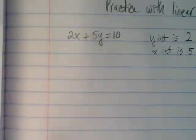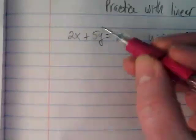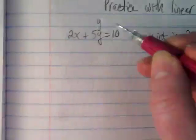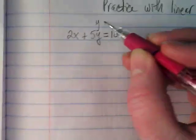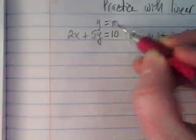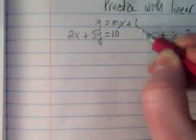But what I really want us practicing today is converting between the forms. So what I'd like us to do is to convert this into slope-intercept form. And to get that to be converted we want to change this from ax plus by equals c to be y equals mx plus b.